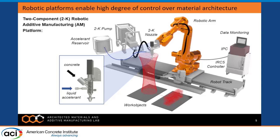For our research, we used a two-component additive manufacturing platform shown here schematically, with a six-axis robot arm printing on a 5.7-meter long track. We continuously feed the printhead with concrete and accelerant, and at the printhead there's an additional mixing chamber that mixes the material right before the nozzle. This allows a high degree of control over material quality. Throughout the system we have pressure sensors and temperature sensors, which are necessary to maintain consistency during prints that can run for hours.